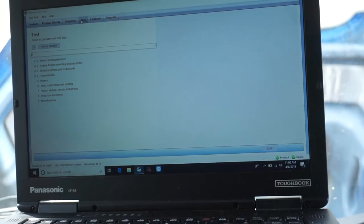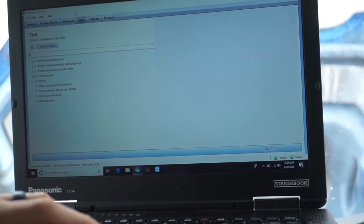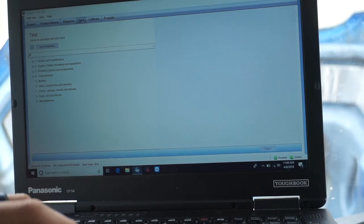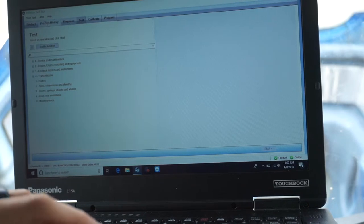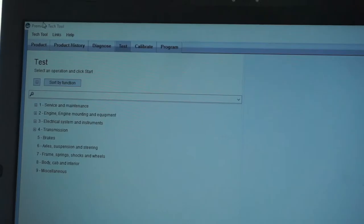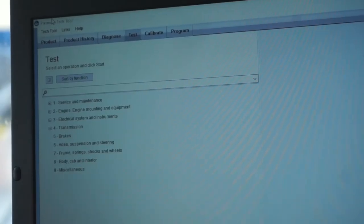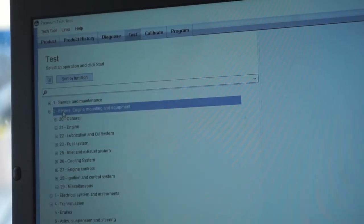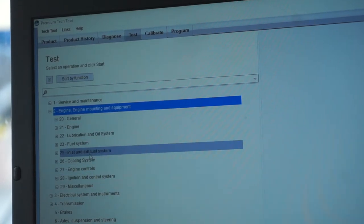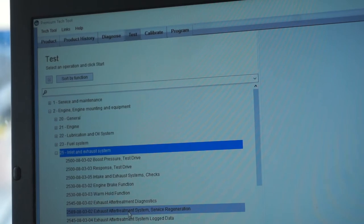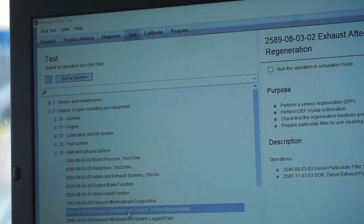Let me get this restarted again. We got the system and the kinks worked out. What you're going to do in this system is up here at the top, you can see where it says test. This is where you're going to go into in order to perform the regen. You go to the engine, engine mounting and equipment, click on it, inlet and exhaust system, and then down here you'll see exhaust after treatment system service regeneration.